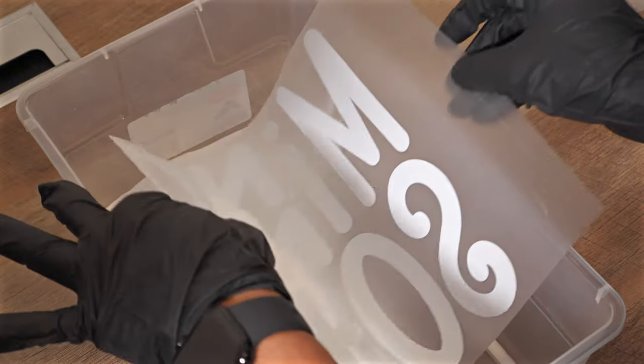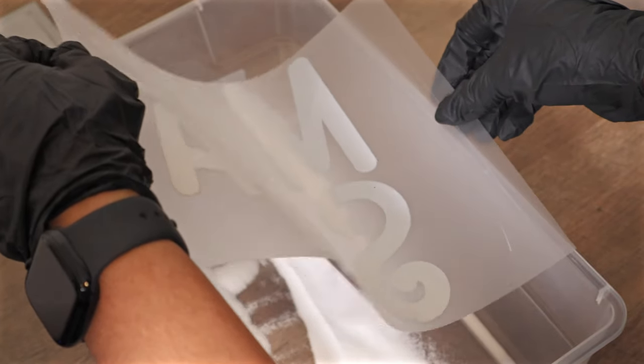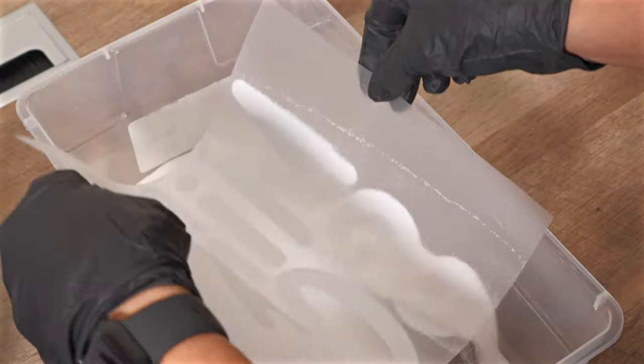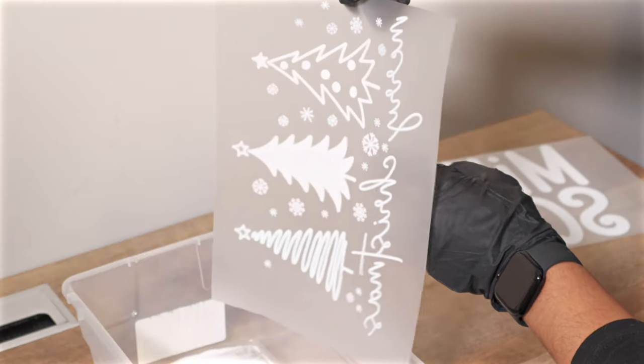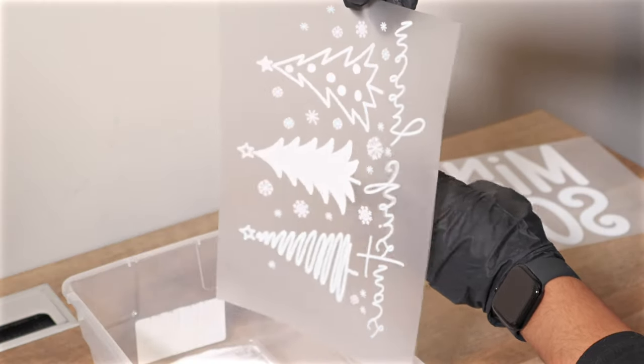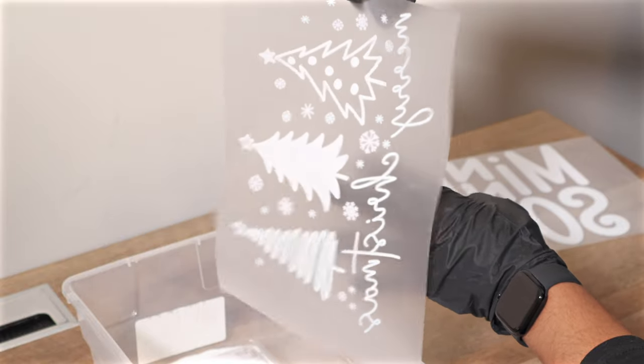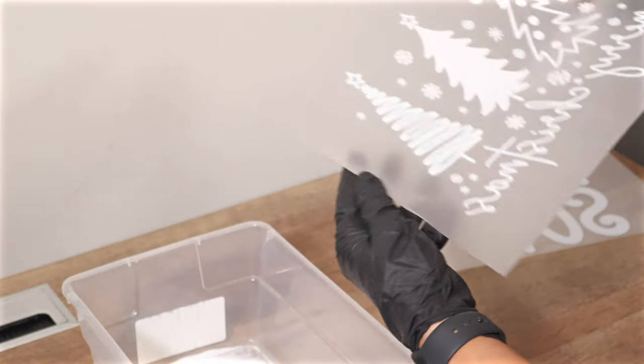Next, we applied a fine adhesive powder to the back of the film. To ensure an even coat, we scooped some powder onto the film and tilted it back and forth, allowing it to spread evenly. A quick tap on the back of the film removed any excess powder, leaving us with a clean, prepped design.